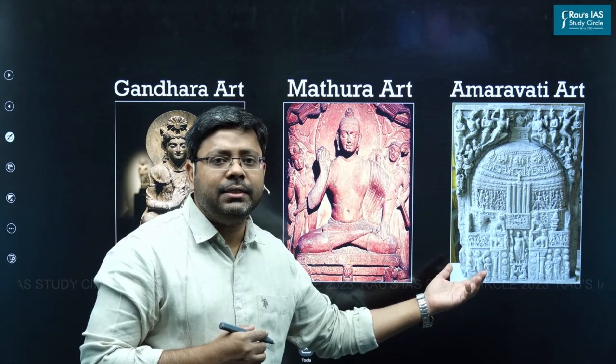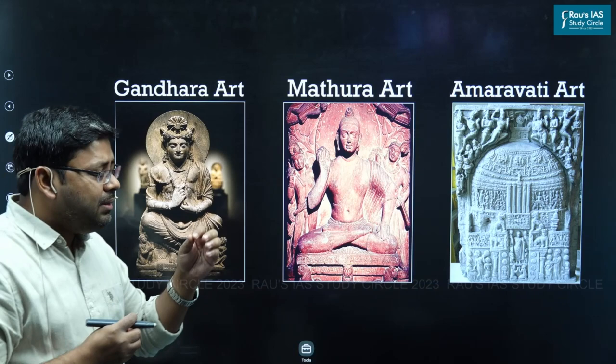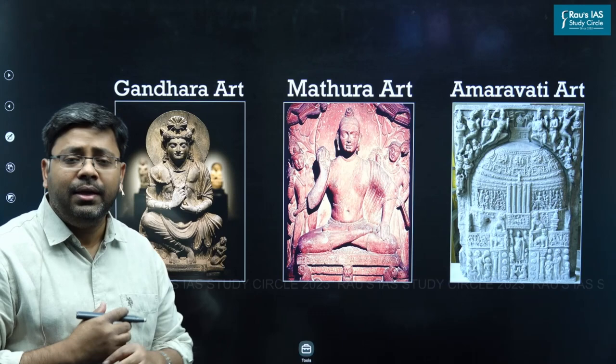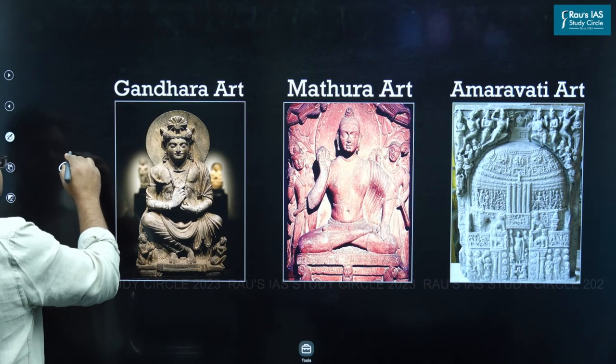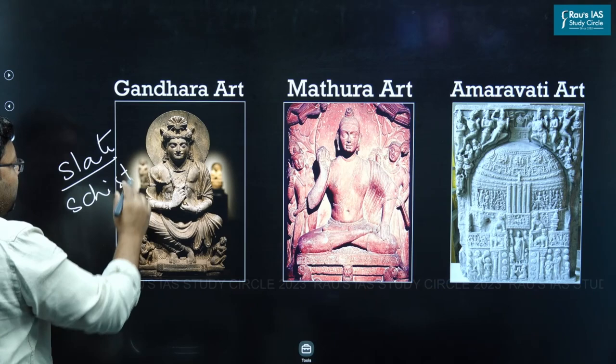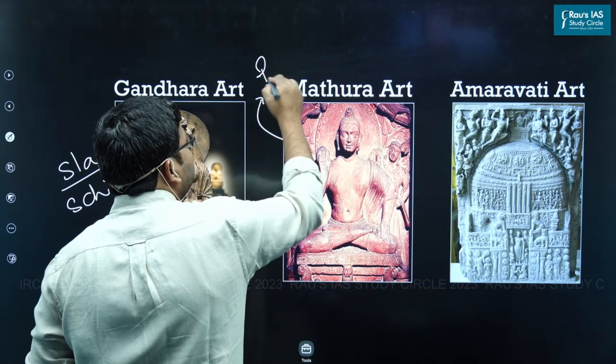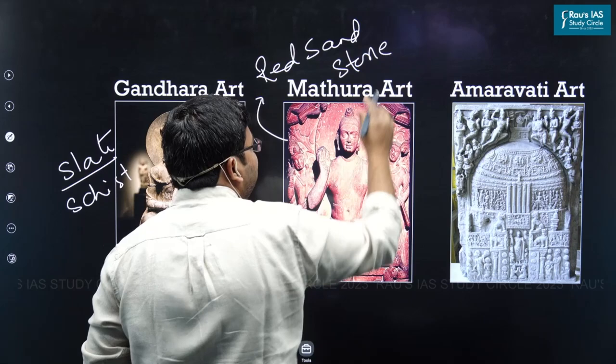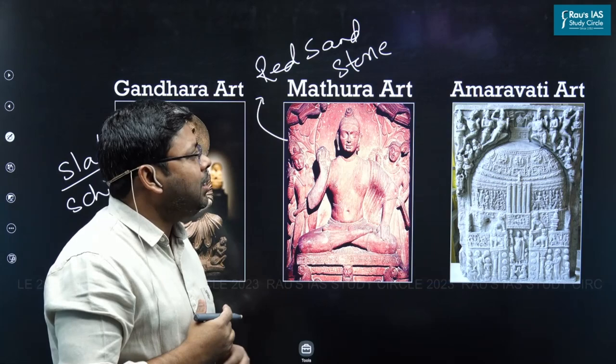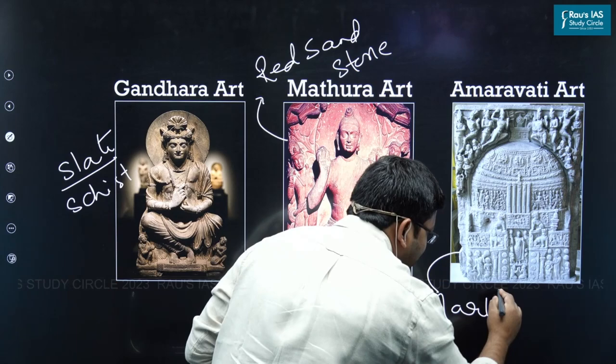There is a significant difference in the materials used across the three art forms. The Gandhara art mainly used stones like slate and schist, so the images of Buddha appear slightly grayish or bluish in color. The Mathura art form mainly used red sandstone, which is why the images appear slightly reddish in color. The Amaravati art form is very special because it used white marble, making the representations very different and very delicate.